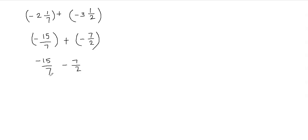Now you see that I have different denominators. I cannot add or subtract these fractions unless I have the common denominator. So to find the common denominator, what I'm going to do is I'm just going to multiply these two denominators. 7 times 2 gives me 14. So now I know that the least common denominator will be equal to 14, so my new denominator is going to be 14.